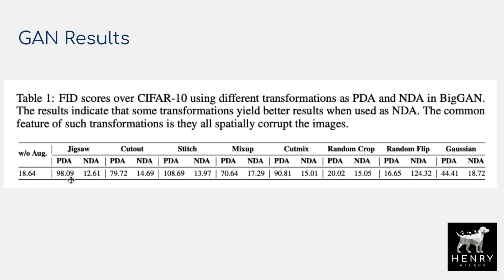The next table compares using jigsaw as positive data augmentation — applying it to real images and still labeling them as real — versus using it as negative data augmentation. With jigsaw as negative augmentation, the FID score is much better. Interestingly, with random flipping, which is actually label-preserving, the effect inverts. This is a really telling result on the efficacy of negative data augmentation, complementing the idea that different kinds of augmentations serve distinct roles across computer vision and potentially other data domains like NLP.